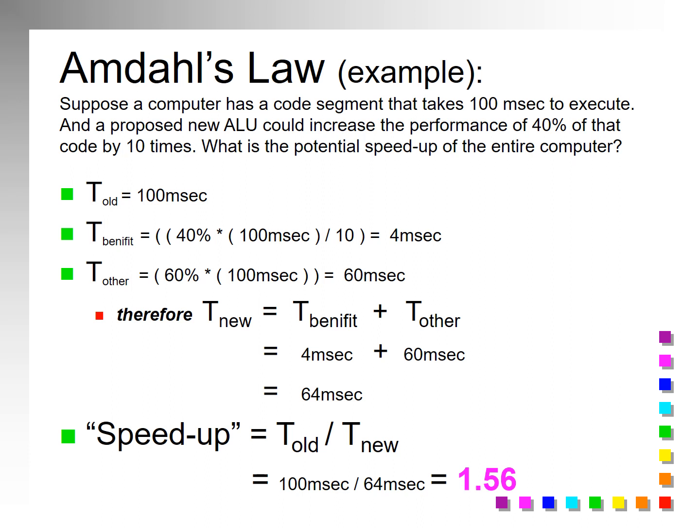So 40% of the code is 10 times faster, so it takes a tenth as long — that's why you're dividing 100 milliseconds by 10. And so you have 4 milliseconds for the part that's benefiting, which is faster. So you reduce that time. And then 60% of the code is still going at the 100 millisecond benchmark we had before we did anything, and so we have 60 milliseconds contributing for T other.